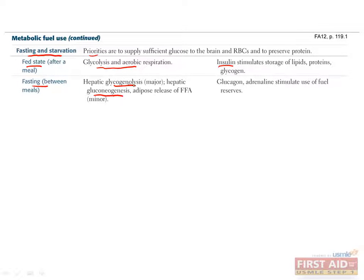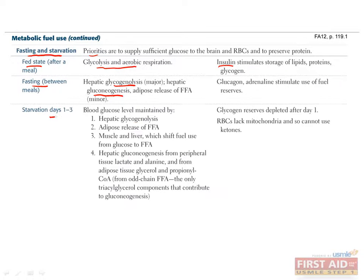Unfortunately, glycogen stores only last about one day. After the first day of fasting, you enter the starvation phase, in which you must use other fuel sources to make ATP. After most of the hepatic glycogen has been consumed, adipose tissues release free fatty acids for beta-oxidation, and muscle and liver switch their fuel source from glucose to free fatty acids.